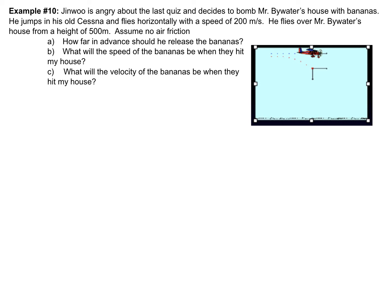We're assuming no air friction. The question being asked — letter A — is how far in advance should he release the bananas? That should make sense because if my house is down here at the bottom, he can't wait till he's right over me. If he drops it directly overhead, it doesn't drop straight down — it continues forward with the same speed, which means it's going to completely miss me. So where exactly, and what distance in advance does he need to drop those bananas?